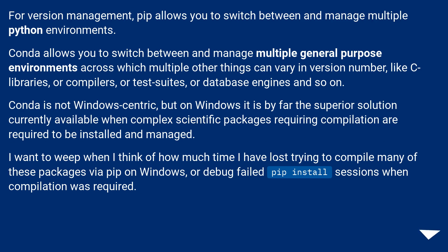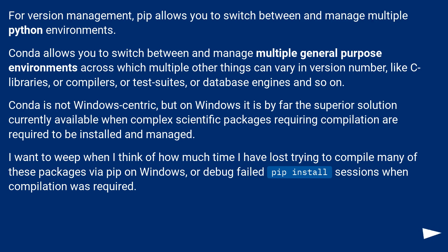For version management, pip allows you to switch between and manage multiple Python environments. Conda allows you to switch between and manage multiple general purpose environments across which multiple other things can vary in version number, like C libraries, compilers, test suites, or database engines and so on. Conda is not Windows-centric, but on Windows it is by far the superior solution currently available when complex scientific packages requiring compilation are required to be installed and managed.